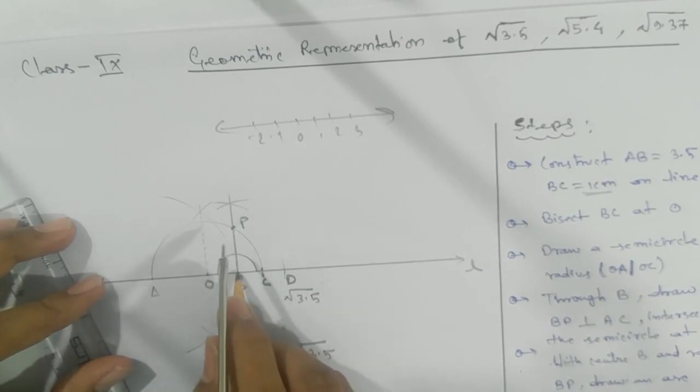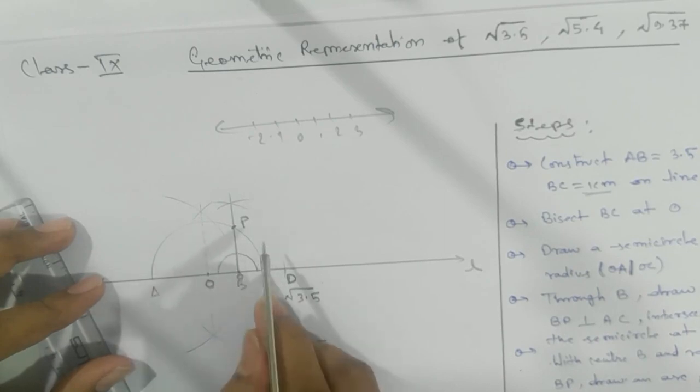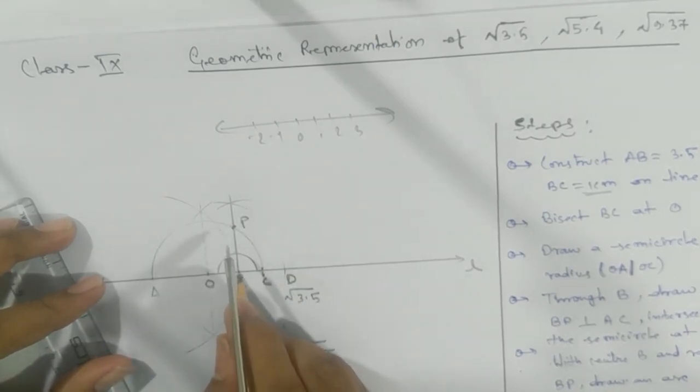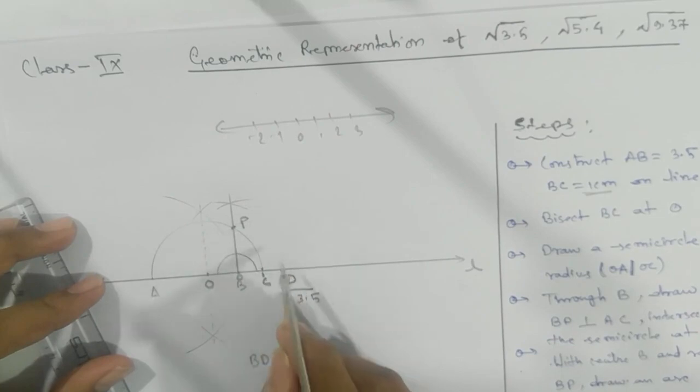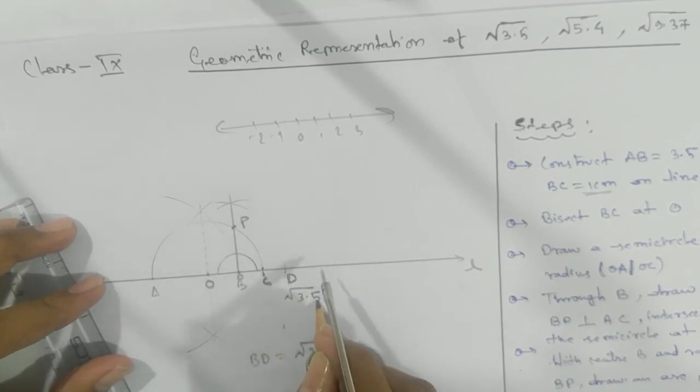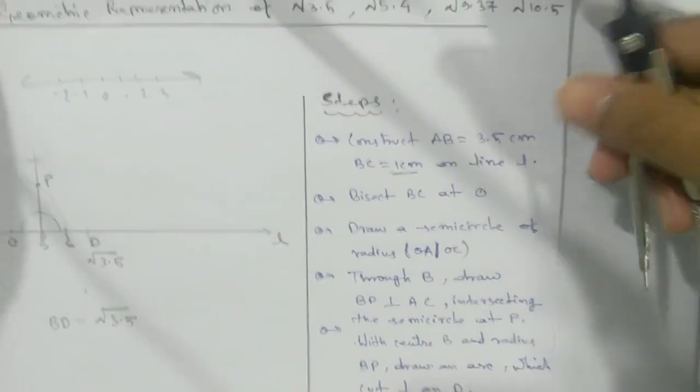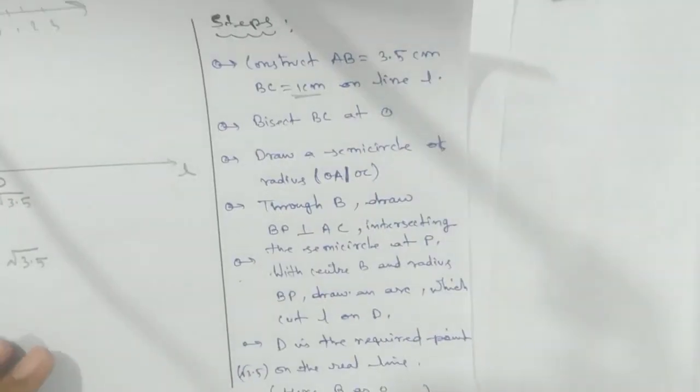B is your starting point - this is 0, 1, and this will be your √3.5. I hope you have understood. Here we have the steps - you can see these steps. Okay, thank you.